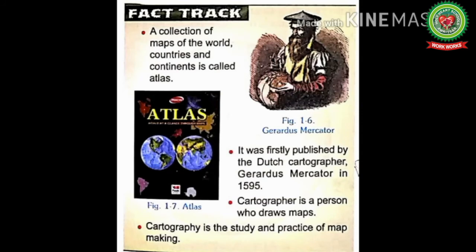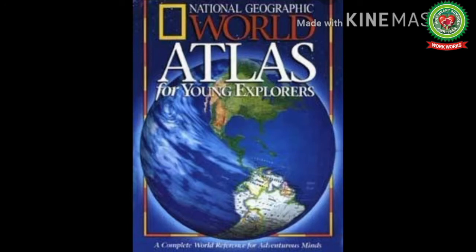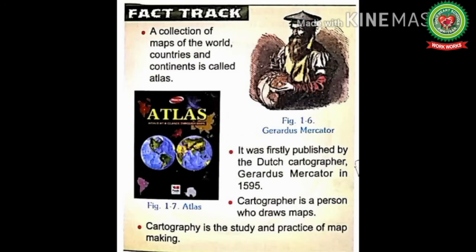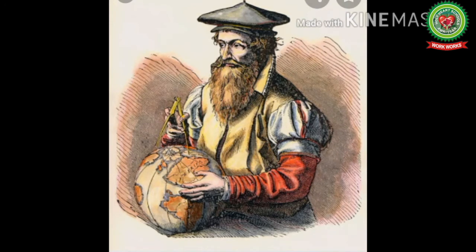Next we will discuss Fact Track. A collection of Maps of the World, Countries and Continents is called Atlas — meaning a book of Maps. It was first published by the Dutch cartographer Gerardus Mercator in 1595. Here, Dutch means the people of Nederland. A cartographer is a person who draws Maps, and cartography is the study and practice of Map making — i.e. the art of making Maps. This is the picture of Gerardus Mercator, who is best known for his collection of Maps called Atlas.